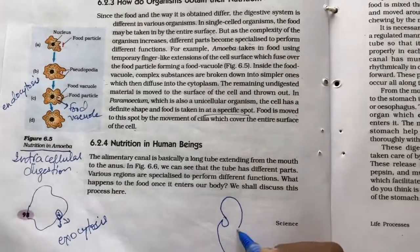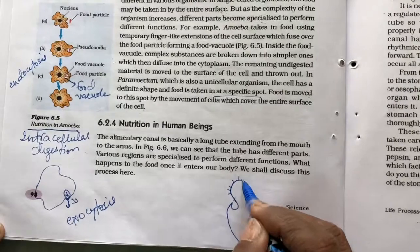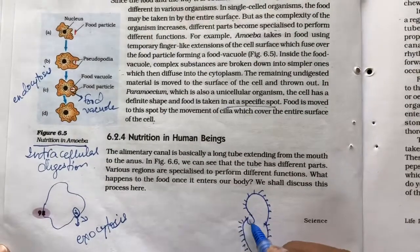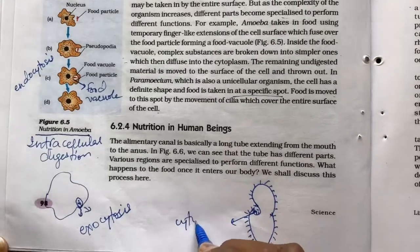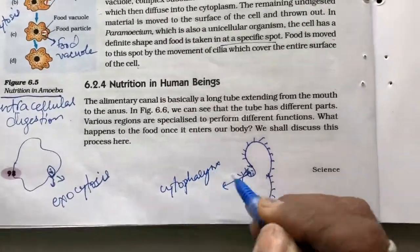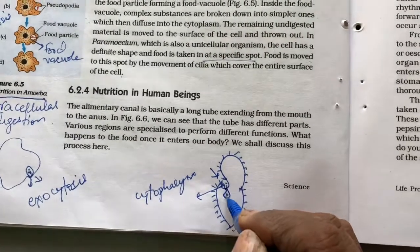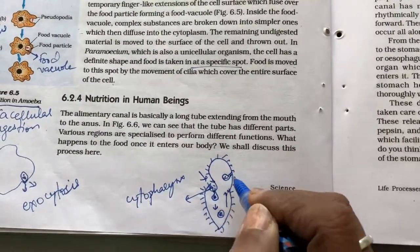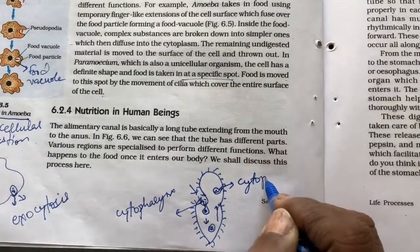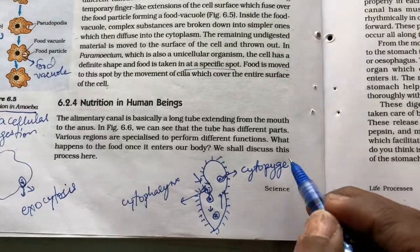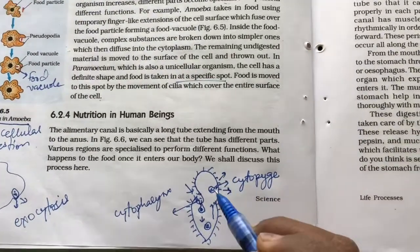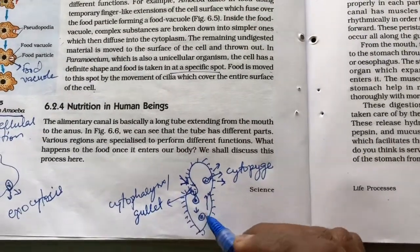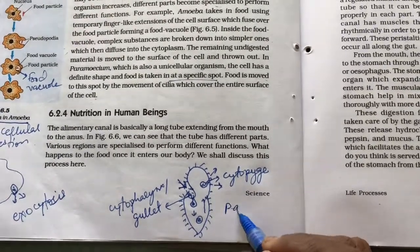Paramecium you know is a ciliate and it has got cilia all over the body, like this. But this is the point, this one which is called the cytopharynx. And food is taken in only through this point which will be forming a food vacuole here. The food vacuole is digested over here and finally, the undigested food will be thrown out through the cytopyge, we call it as cytopyge or the cell anus. So this is the point where the food will be thrown out, so it can be taken in only at a point called cytopharynx or the gullet and it has to be thrown out only from a certain point that is specifically to paramecium.